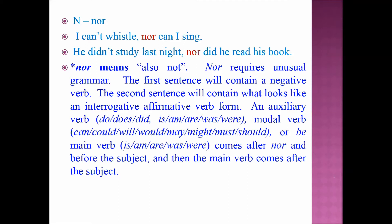NOR requires unusual grammar. The first sentence will contain a negative verb, whereas the second sentence will contain what looks like an interrogative affirmative verb form. An auxiliary verb — do, does, did, is, am, was, were — or a modal verb like can, could, will, would, may, might, must, should — or the main verb 'be' — comes after NOR, before the subject, and then the main verb comes after the subject.